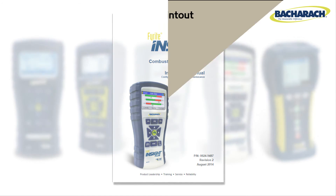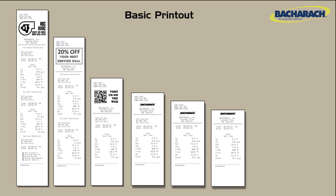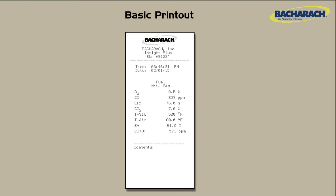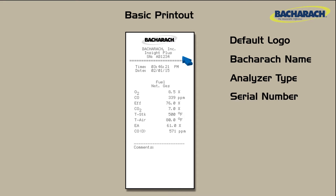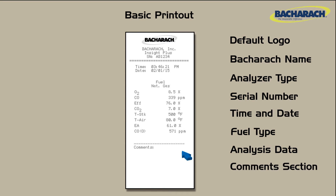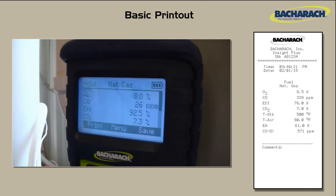Let's look closer at some printout examples. A basic printout contains useful information about the combustion analysis that was performed. Components typically include the default Bacharach logo and company name, the analyzer type, the serial number of the analyzer, the time and date of the printout, the fuel type of the equipment you tested, a list of analysis parameters and their values, and a comment section for handwritten notes. This printout is the standard no-frills printout to provide just the basics.